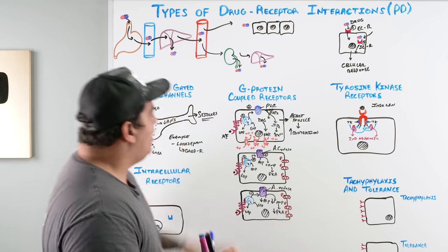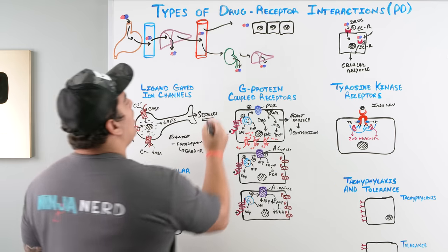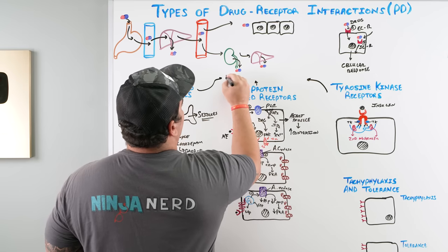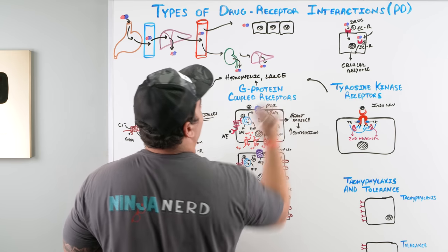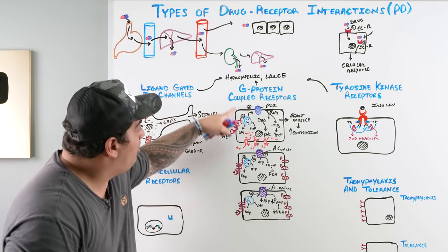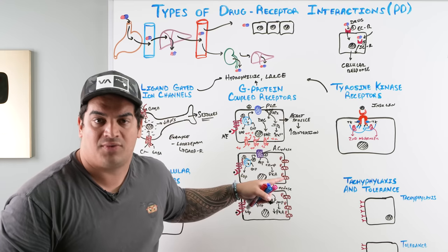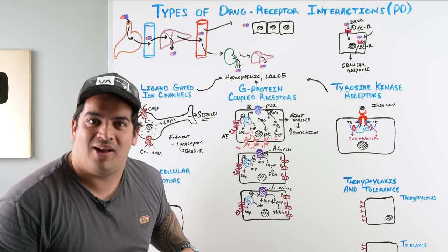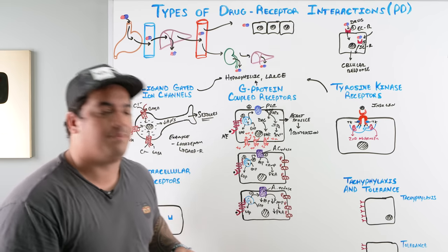To summarize extracellular receptors: ligand-gated ion channels, G protein-coupled receptors, and tyrosine kinase receptors are used by hydrophilic, large, polar, or charged drugs that cannot cross the phospholipid bilayer. Intracellular receptors, by contrast, are for hydrophobic, small, non-polar drugs that can easily pass across the cell membrane.